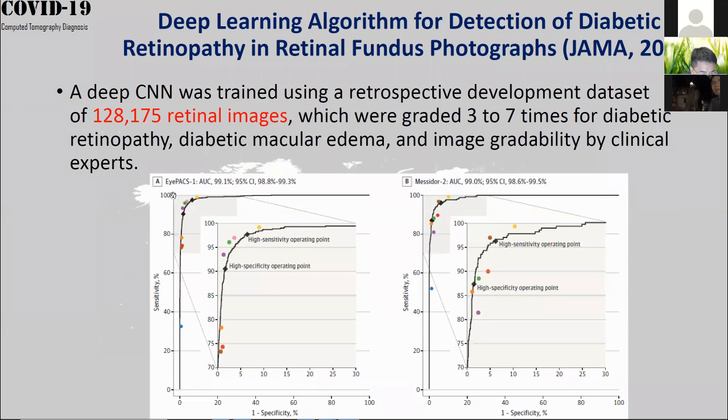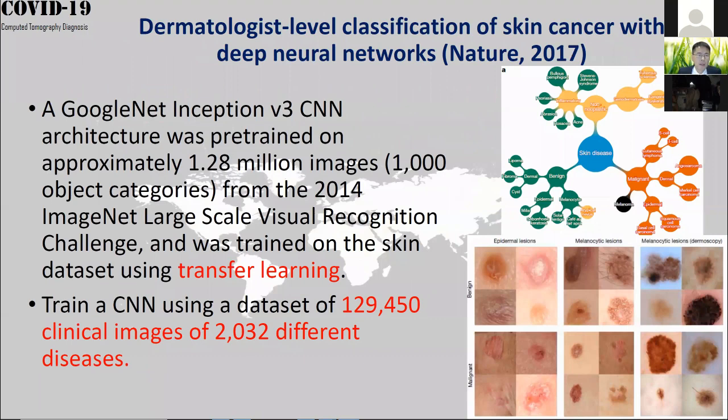Comparing the AI results with several eye doctors, the eye doctors' results are shown using colored dots, and you can see that the AI results are very comparable to the real doctors. The third example is about dermatologist-level classification of skin cancer.